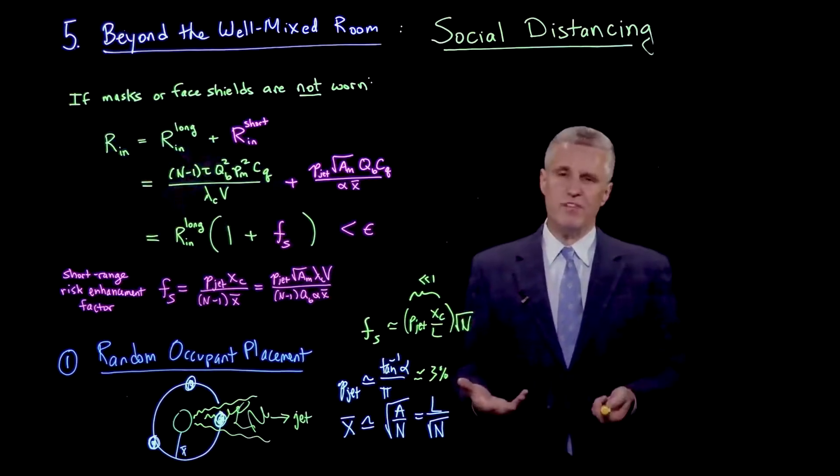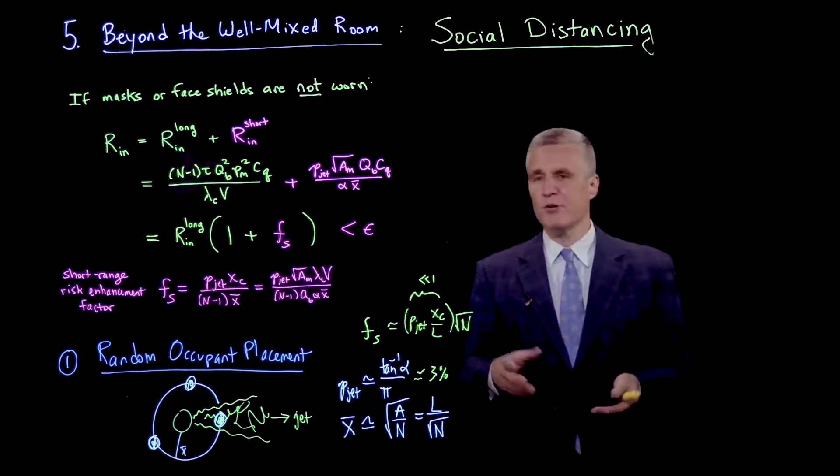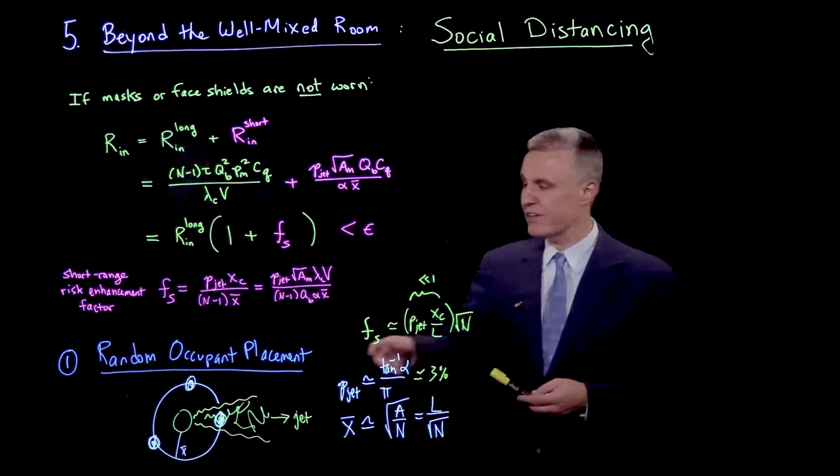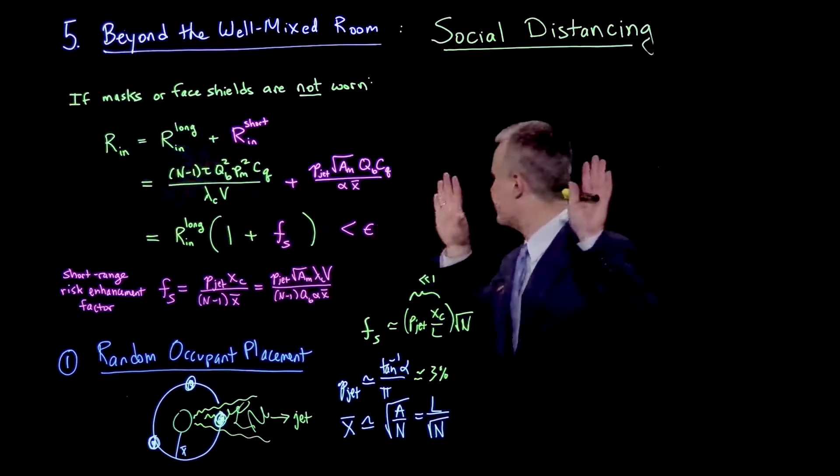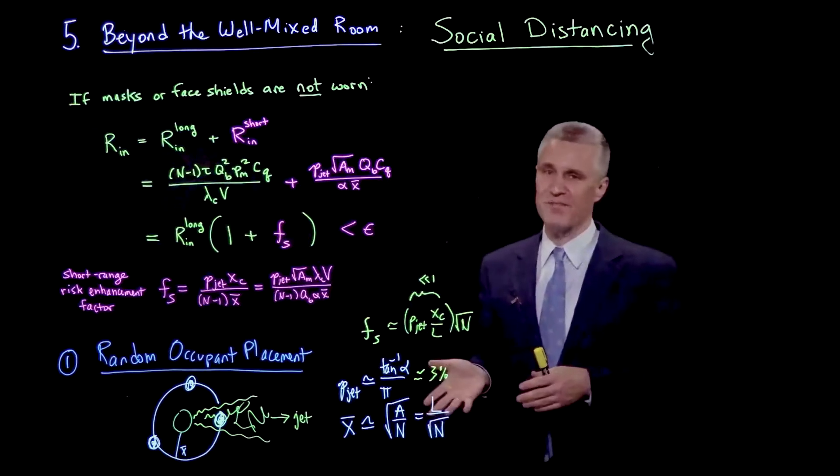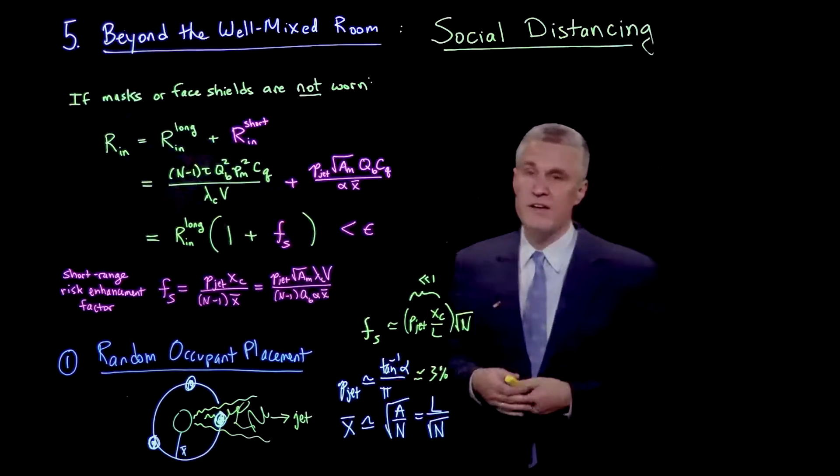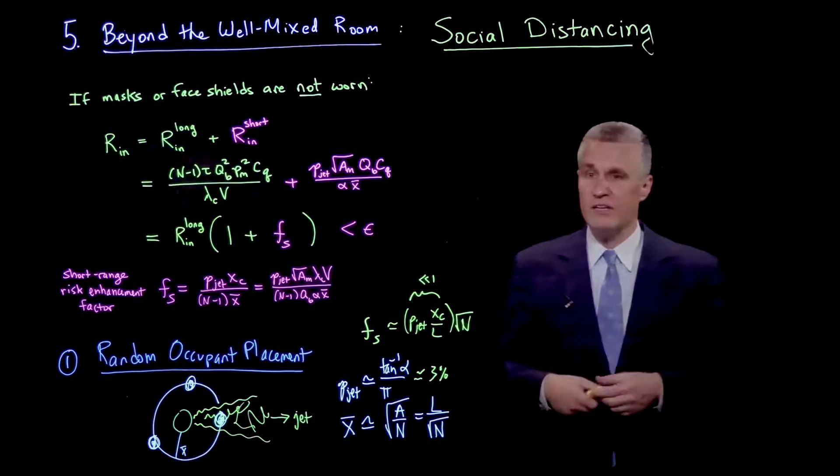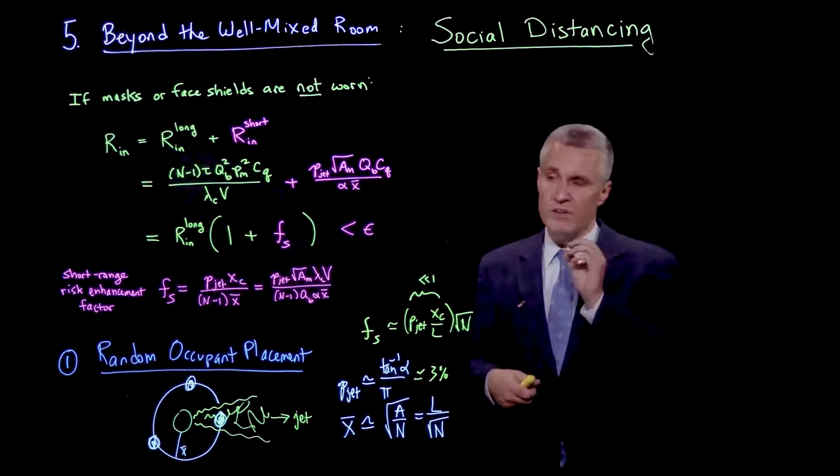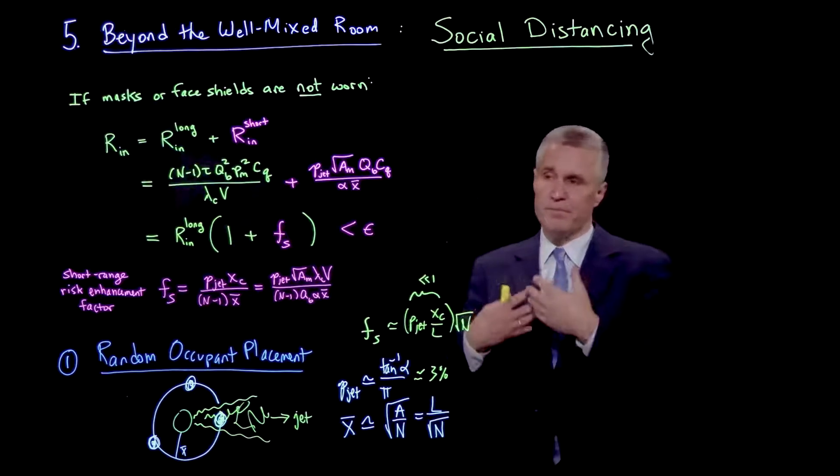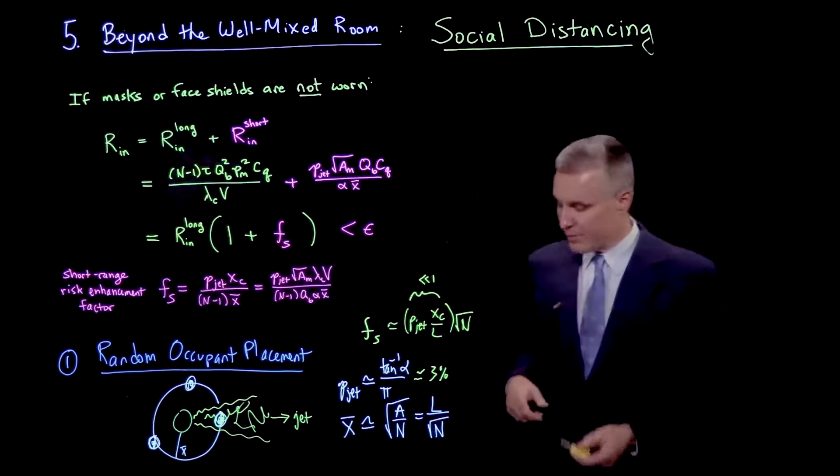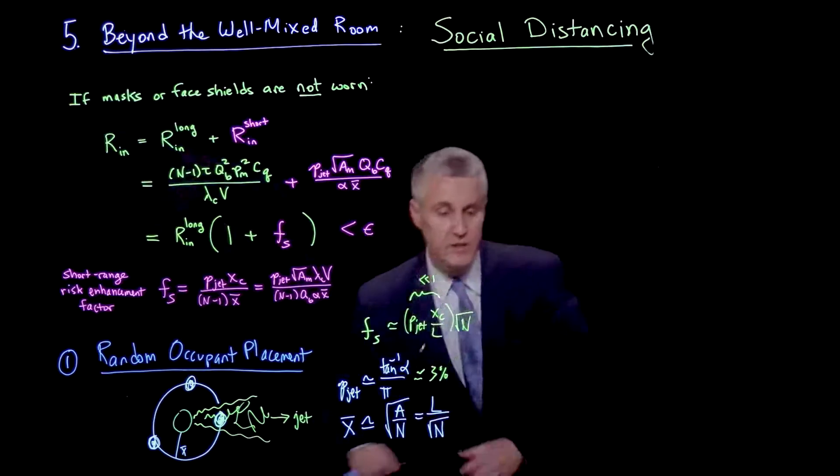On the other hand, the random placement situation is not quite the best case scenario, but it's a fairly optimistic scenario. The best case is that people are always kind of having their backs to each other, never breathing on each other. That never really happens. In fact, it's more typical in human interactions for people to face each other. They may be talking to each other, looking at each other. And so hence, we tend to find ourselves more typically in the way of breathing.